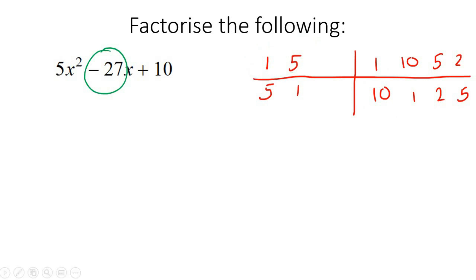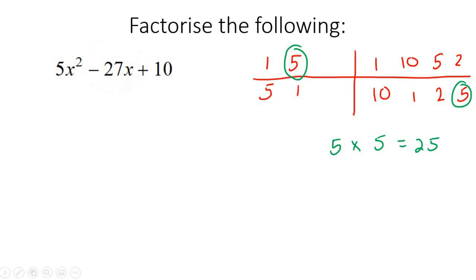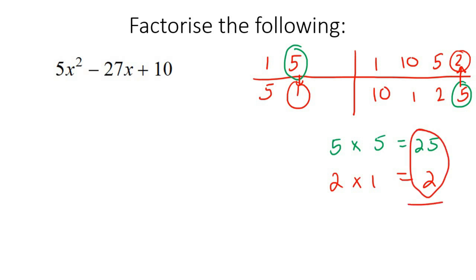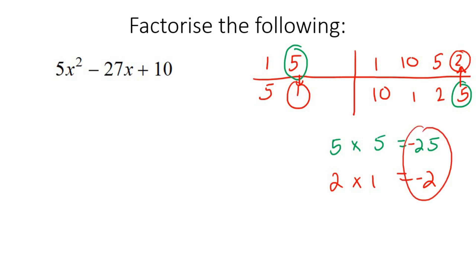Let me show you one that actually does work. Choose 5 from the first column and 5 from the second. Multiply them — that gives 25. We're getting close to 27, which is a good sign. Then choose the opposites: 2 times 1, which is 2. Now, looking at these two numbers — 25 and 2 — those can give you 27. But we're trying to make minus 27, so we need the 25 to be negative and the 2 to be negative, because negative 25 plus negative 2 gives negative 27.